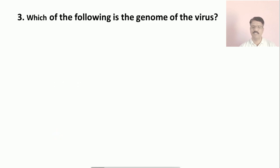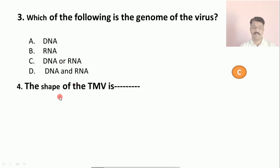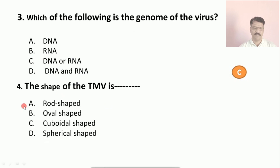Question number three: which type of molecule is the genome of a virus? Options: (a) DNA, (b) RNA, (c) DNA or RNA, (d) RNA and DNA. The correct answer is (c), DNA or RNA. Question number four: the shape of the TMV virus. Options: (a) rod shaped, (b) hole shaped, (c) cuboidal shaped, (d) spherical shaped. The correct answer is (a), rod shaped.